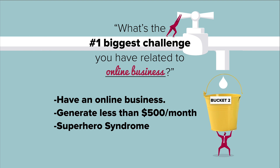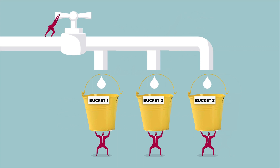Then I clumped everybody else into bucket number three — people making more than $500 a month. Having these three buckets is how I divide my audience so I can serve them with different information. For example, would bucket one people — who haven't started an online business — benefit from an article on advanced SEO? Probably not. They'd be overwhelmed and unsubscribe. When I had one giant bucket, I'd send advanced content to everybody or beginner content to everybody. Bucket three people receiving beginner content would think, 'I've outgrown Pat's site.'